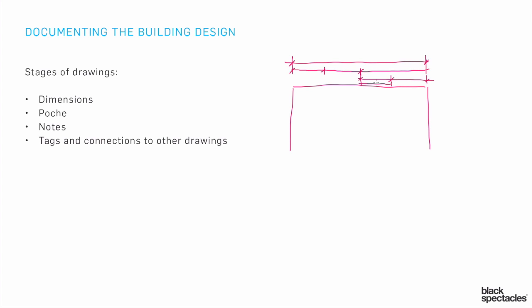At some point I'm saying, here's the last bit of information I'm going to put on this drawing. Everything else — if you want more detail about what's going on — you're going to use that tag and go to another drawing. So this would go through multiple phases: first the overall dimension, then a breakdown of those dimensions, and then making sure all the tags are sending you to the appropriate drawings.